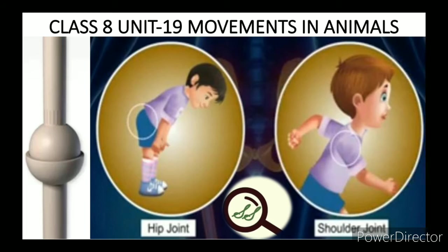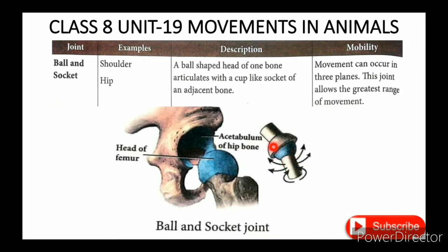In the ball and socket joint, this bone is the ball, and the socket is fixed. A ball-shaped head of one bone articulates with a cup-like socket of an adjacent bone. Movement can occur in three planes. This joint allows the greatest range of movement. Examples include the shoulder and hip.